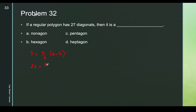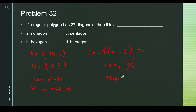We have n/2 × (n − 3) = 27, so cross-multiplying by 2 gives us n(n − 3) = 54. Expanding: n² − 3n − 54 = 0. Factoring gives (n − 9)(n + 6) = 0, so n = 9 or n = −6. Since n = −6 is not possible, we have n = 9. A nonagon has 9 sides, so the answer is letter A.